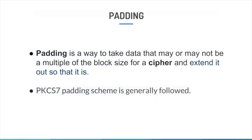Before moving on to further modes of encryption, we need to take a quick look at padding. A block cipher works on units of a fixed size known as block size, but messages come in a variety of lengths. Modes such as ECB and CBC require that the final block be padded before encryption. Padding is a way to take data that may not be a multiple of the block size and extend it so that it is.